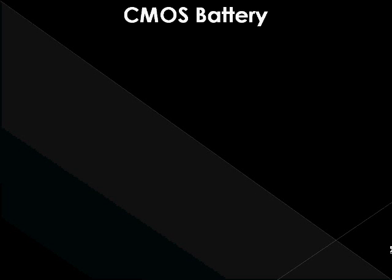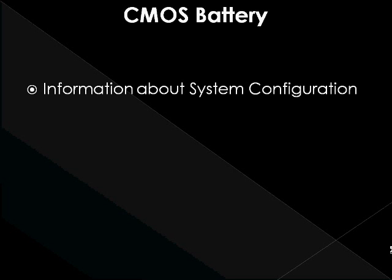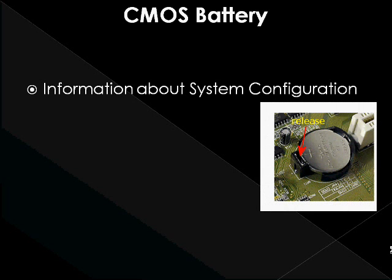CMOS is a type of memory that works with the BIOS. It stores configuration information for the computer, including hard disk type, floppy drive types, and the order in which the computer will look for bootable disks. An important characteristic of a CMOS circuit is duality. A CMOS circuit is created so that a path would always exist from the output to either the power source or ground. CMOS devices have high noise immunity and low static power consumption.